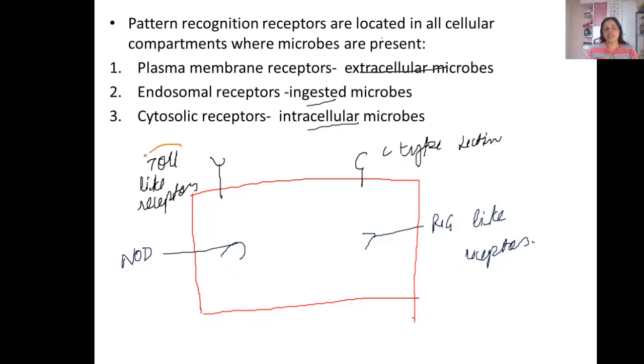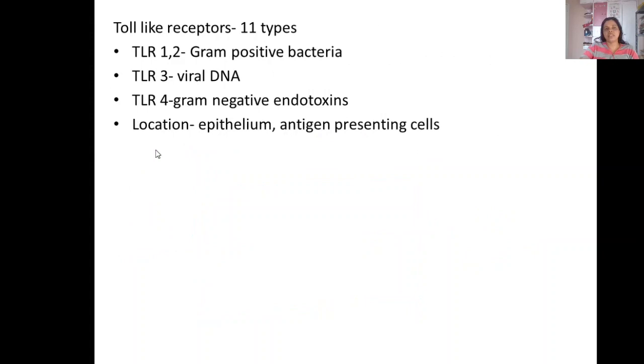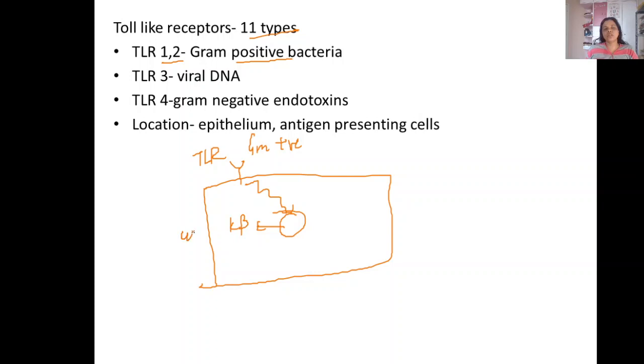These toll-like receptors are the best defined receptors. They are of 11 types. Toll-like receptor 1 and 2 recognize the gram-positive bacteria. When the toll-like receptor encounters gram-positive bacteria, they send the signal transduction proteins to the nucleus and nucleus synthesizes NF-kappa beta and also the cytokines. These cytokines kill the gram-positive bacteria.